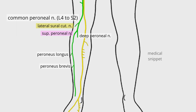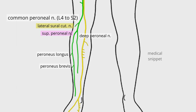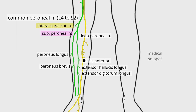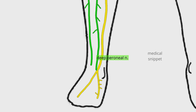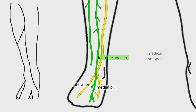The deep peroneal nerve travels down the anterior compartment of the leg along with the anterior tibial artery. It supplies the anterior compartment muscles: tibialis anterior, extensor hallucis longus, extensor digitorum longus, and peroneus tertius. In the foot, the deep peroneal nerve terminates into medial and lateral branches. The medial branch accompanies the dorsalis pedis artery and at the first interosseous space divides into two dorsal digital nerves, which supply the adjacent sides of the great and second toes. The lateral branch supplies the extensor digitorum brevis and extensor hallucis brevis.